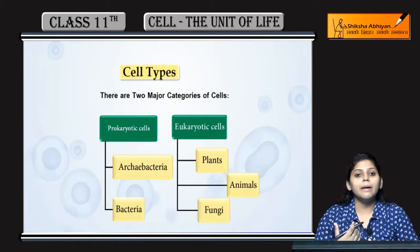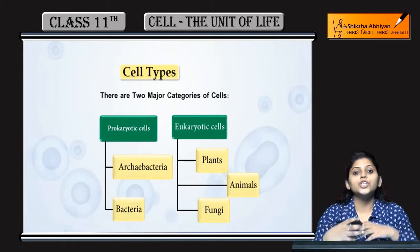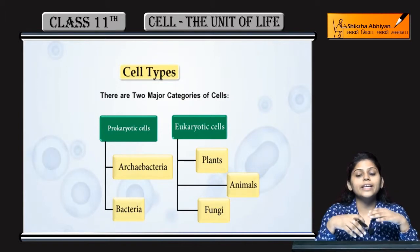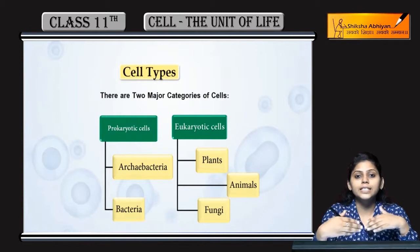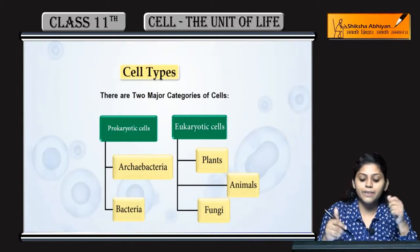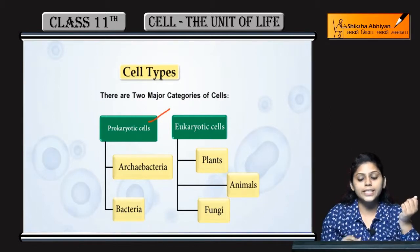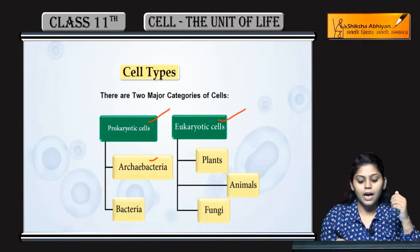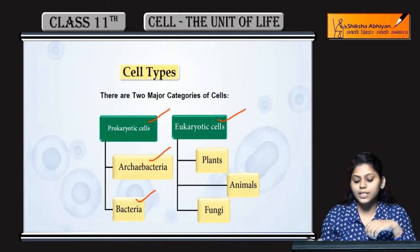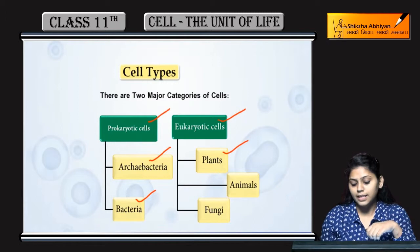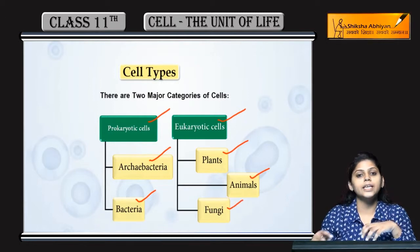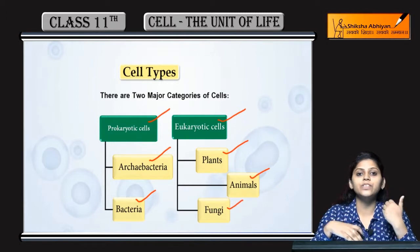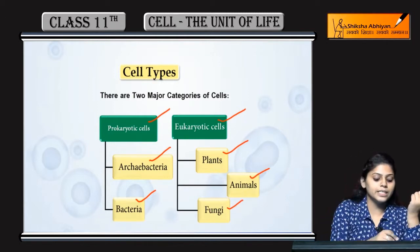Based on the presence or absence of nuclear envelope or any membrane-bound organelles, cells are divided into two categories: prokaryotic cells and eukaryotic cells. Prokaryotes के examples हैं Archaebacteria and Bacteria. Eukaryotes के examples हैं Plants, Animals and Fungi. इन सबको हमने detail में previous chapters में study किया है.